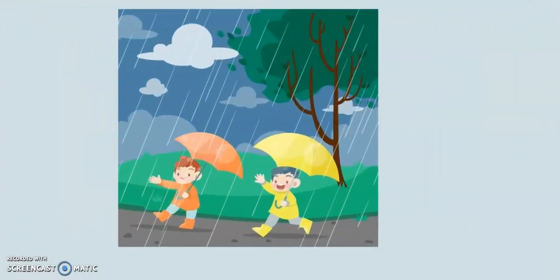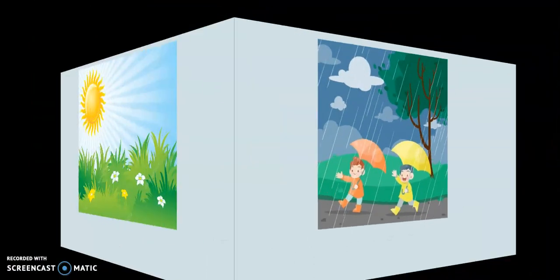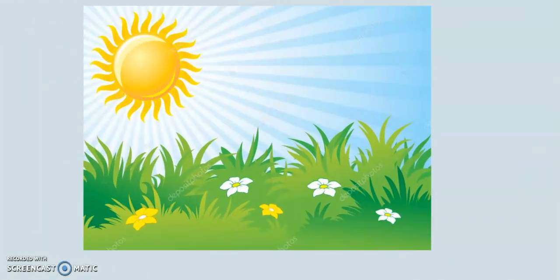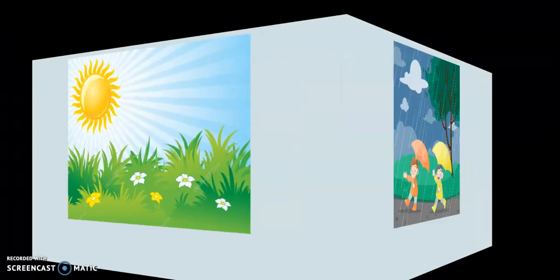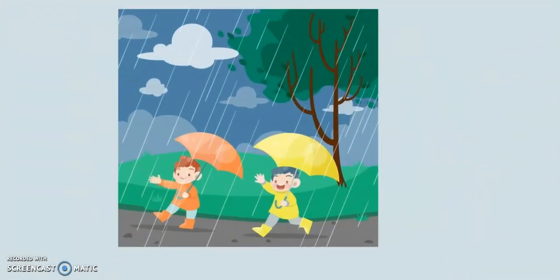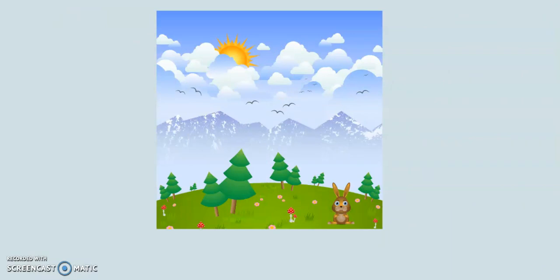What do you see? A rainy day. How's the weather like today? It's a sunny day. One more time. What do you see? A sunny day. How's the weather like today? It's a sunny day. What do you see? A rainy day. How's the weather like today? It's a rainy day. What do you see? A cloudy day. How's the weather like today? It's a cloudy day.